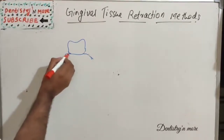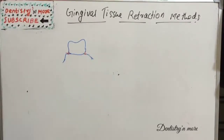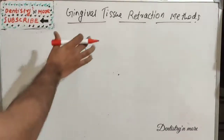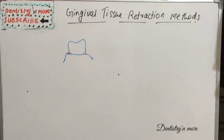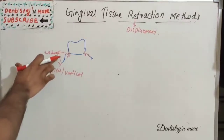The finish line is very important in FPD — it is the cervical part of the preparation. Gingival retraction helps in reproducing the finish line and duplicating the subgingival margins very accurately, providing the best possible condition for the impression material. It also helps in fluid control, precision of the restoration, and prevention of periodontal disease.